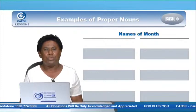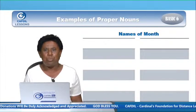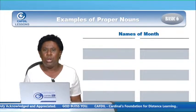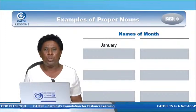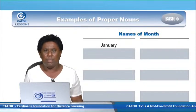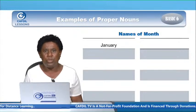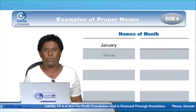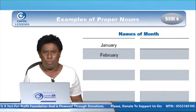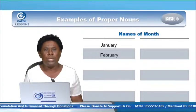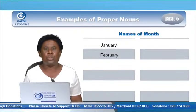Now we have different days and different months of the year. This type of name — we have a lot of names. That is January: it's a particular name given to a month in the year, starts with capital J, because it's a particular name given to that month, and it's a proper noun. We have February — it starts with capital F, because it's a particular name given to a particular month, and it's a proper noun.